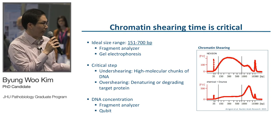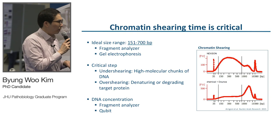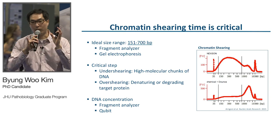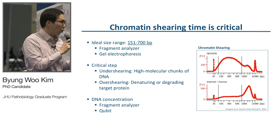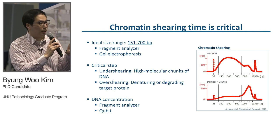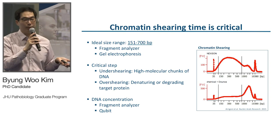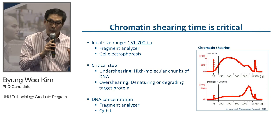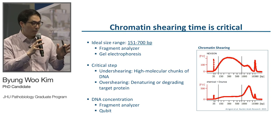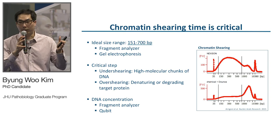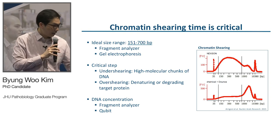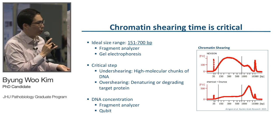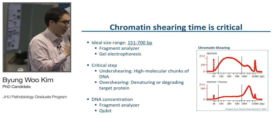The problem occurs if you undershear, because you'll end up with large chunks of DNA. And if you overshear, you'll end up with very small DNA sizes that are not usable for sequencing, and your target protein can be denatured or degraded. Measuring DNA concentration after you shear chromatin is also really important, because you need a high enough amount of DNA to start IP. The graph here shows that with NEXIN technology, you get more highly pure nuclei, resulting in better chromatin shearing.